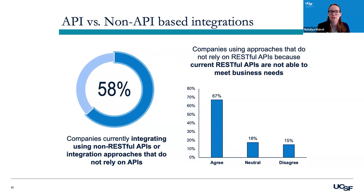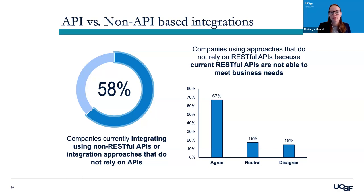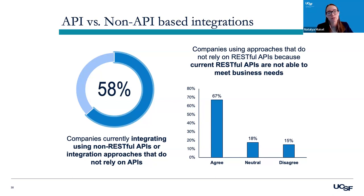We also asked about non-RESTful APIs and non-API-based integrations, such as SFTP and HL7 version 2. About 57% of companies were integrating using these non-RESTful or non-API-based approaches. For companies relying on these approaches, about 67% agreed with the statement: 'We're using approaches that do not rely on RESTful APIs because current RESTful APIs are not able to meet our business needs.'